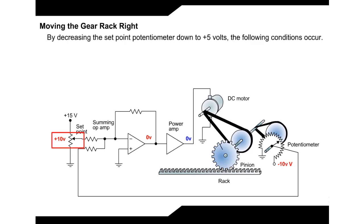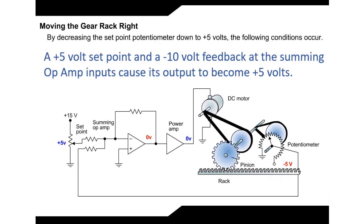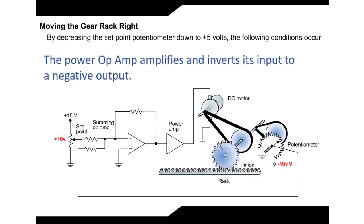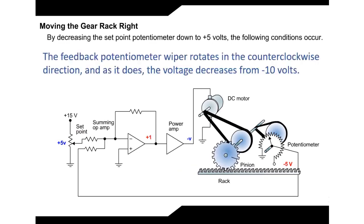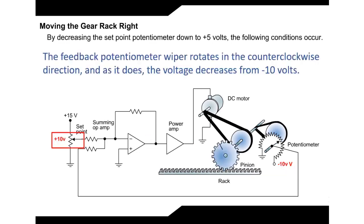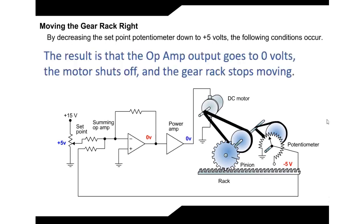Moving the gear rack right: By decreasing the set point potentiometer down to positive 5 volts, the following conditions occur. The feedback signal is negative 10 volts. A positive 5 volt set point and a negative 10 volt feedback at the summing op-amp inputs cause its output to become positive 5 volts. The power op-amp amplifies and inverts its input to a negative output. Then the DC motor begins to turn counter-clockwise. The rack is forced to move right. The feedback potentiometer wiper rotates in the counter-clockwise direction and as it does, the voltage decreases from negative 10 volts. When the wiper arm of the feedback potentiometer reaches the negative 5 volt position, it cancels out the positive 5 volts applied to the top input of the summing op-amp. The result is that the op-amp output goes to 0 volts, the motor shuts off, and the gear rack stops moving.